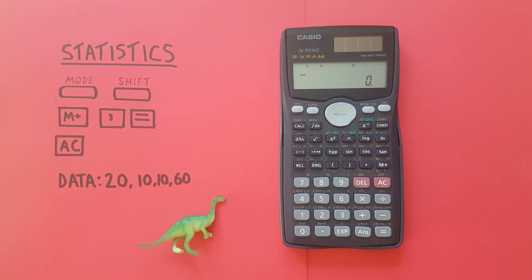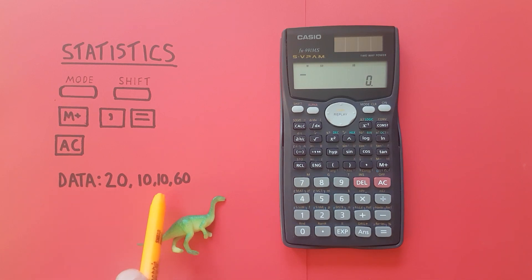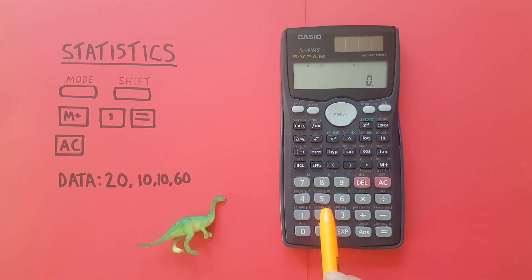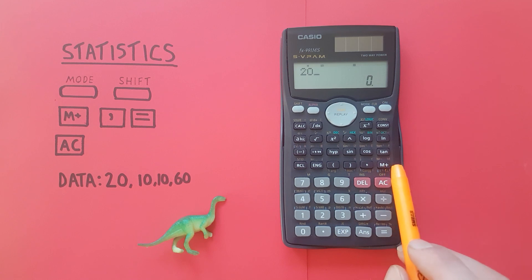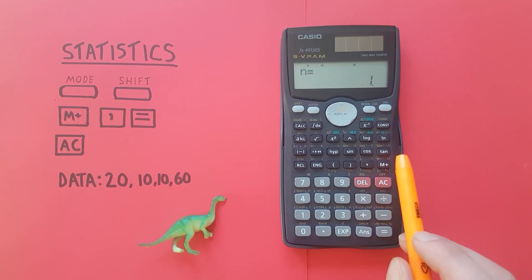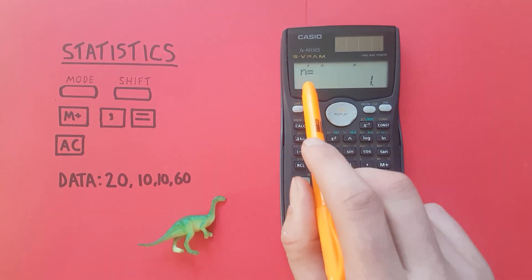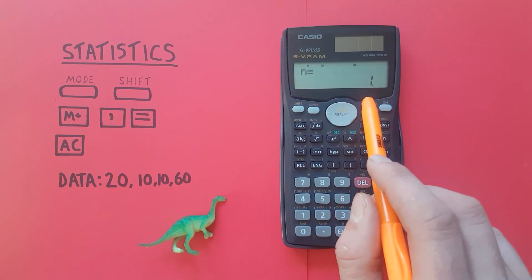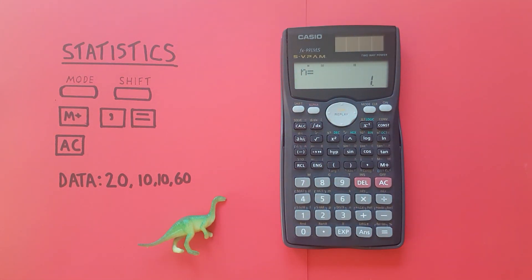All right, so for this example this will be our data set here: 20, 10, 10 and 60. To start entering data you place the first piece of data on the screen. So for us that's 20 and then press the M plus key. When we do that you get this popping up, it says n equals 1. That lets us know we have one piece of data in our data set.